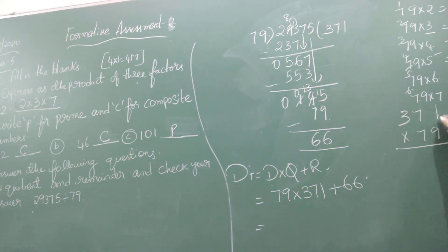9 ones are 9. 9 sevens are 63, so 3 and carry 6. 9 threes are 27, plus 6 gives 33. Then 7 ones are 7. 7 sevens are 49. 7 threes are 21, plus 4 is 25.